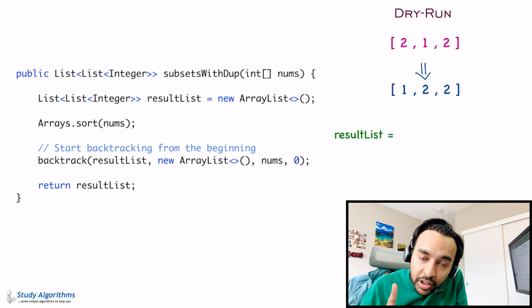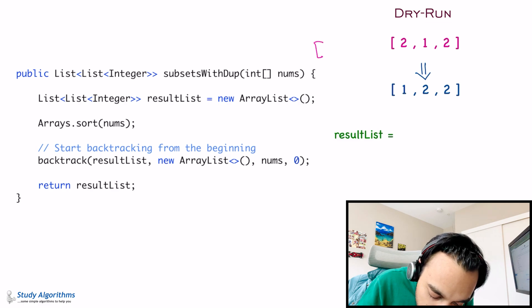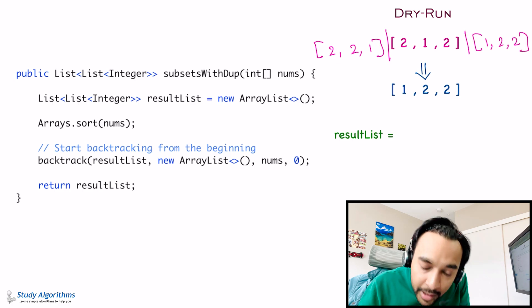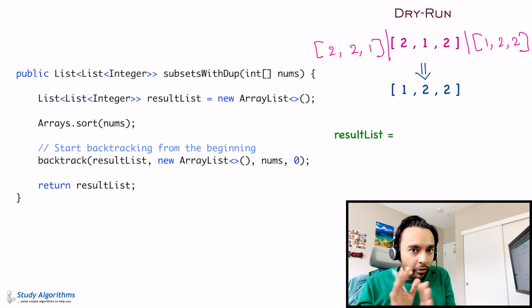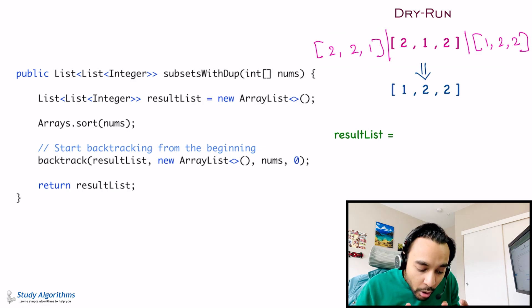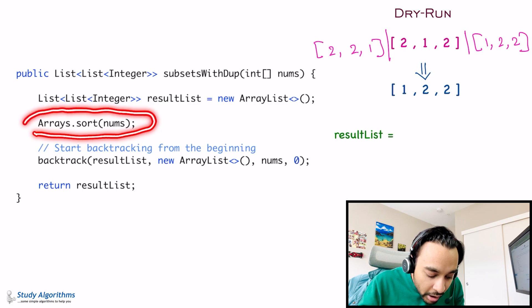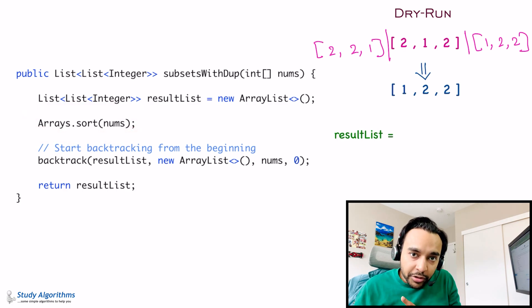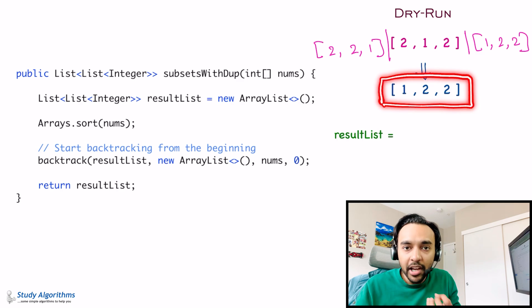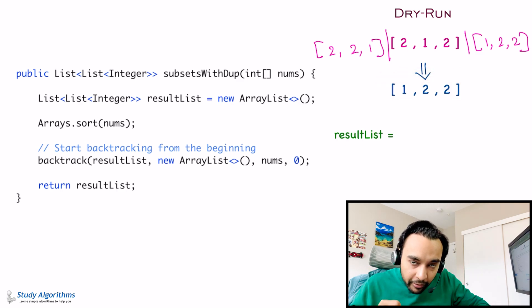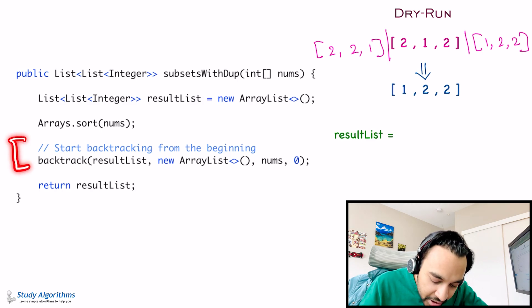One important thing to notice over here is that our test case could also be 2, 2, 1 and it could also have been 1, 2, 2. Right? And if you look closely, all of these are same. Right? Only the ordering of these elements is different. Correct? So, what we do is to make our life easier and to make sure that we are removing all the duplicates effectively. First of all, what we are going to do is, we are going to sort our array. And as soon as you sort this array, all of these arrays will translate into a simple case. And this will be our case that we have to work with. Right?